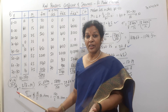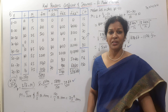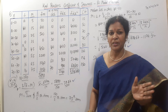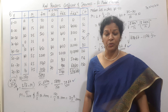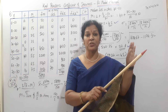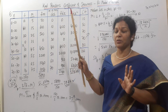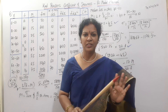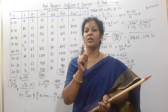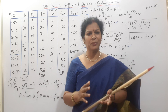Remember the formulas: x-bar is sigma FM by n; for median use CF column; standard deviation requires dx, fdx, and fdx² columns using the formula root of (sigma fdx² by n minus (sigma fdx by n) whole square). These steps are all that is needed — it is quite simple. If this comes in an exam, you can get all the marks, so don't miss any marks.